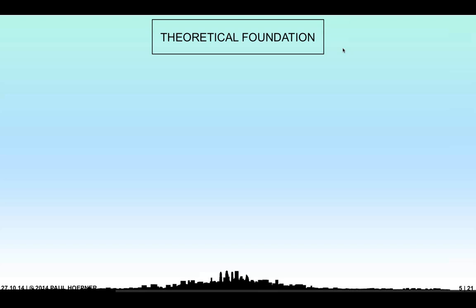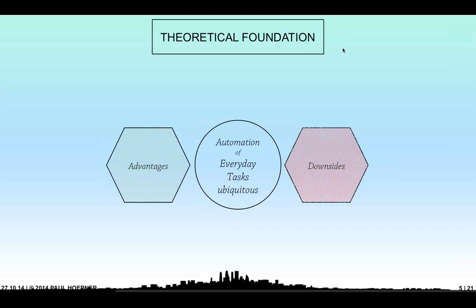The theoretical foundation is based on the fact that automation of everyday tasks is today pretty ubiquitous — that's a lot of advantages. With smartphones, cars, everything you use in your daily life is kind of automated, mostly even highly automated. As opposed to earlier days where automation was only in industry, today it's very much in private lives. And this, of course, has advantages and disadvantages both.